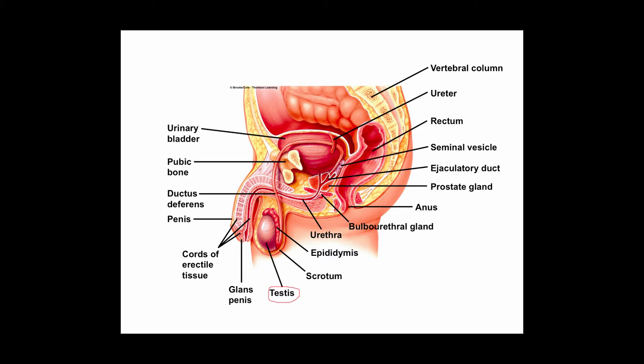The process of gamete production is referred to as gametogenesis. In males it's called spermatogenesis, and in females it's called oogenesis, because it is the production of oocytes. The other primary function of the primary reproductive organs, in addition to gametogenesis, is to secrete sex hormones — estrogen and progesterone in females, and testosterone in males.